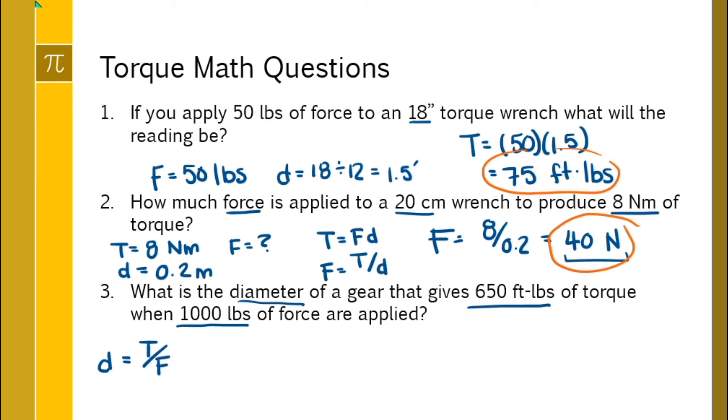So we go 650 divided by 1000, and that gives me 0.65 feet. Now remember, this is a gear.